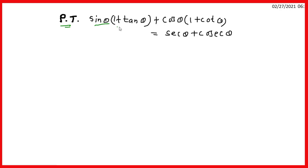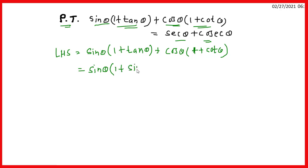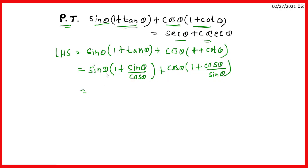Doston, agla prashna hai: prove that sin theta into bracket (1 plus tan theta) plus cos theta into bracket (1 plus cot theta) is equal to sec theta plus cosec theta. Hum LHS ko solve karenge. LHS: sin theta into bracket (1 plus tan theta) plus cos theta into bracket (1 plus cot theta).